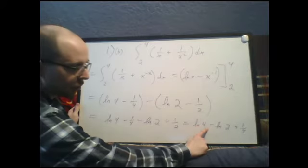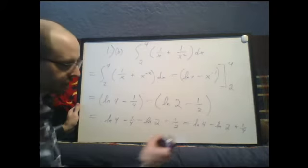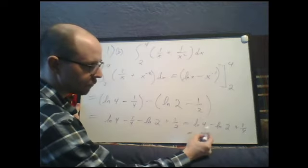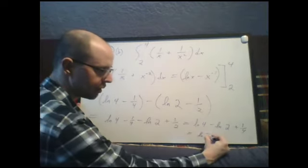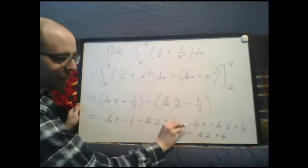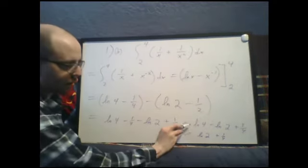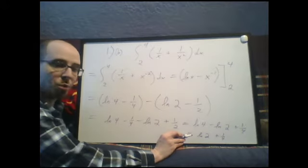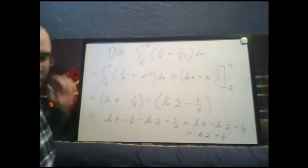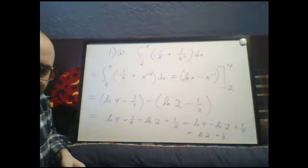Remember, if you subtract logarithms, that's the same as dividing their insides. So I could write this as ln of 4 divided by 2, that would be 2, plus 1 fourth. It's the same answer. So either one of these is exactly correct. If you want to have a decimal approximation, you can plug it into a calculator.